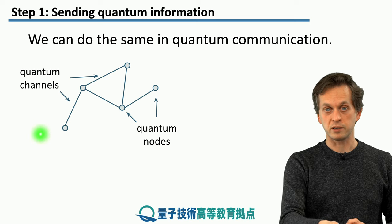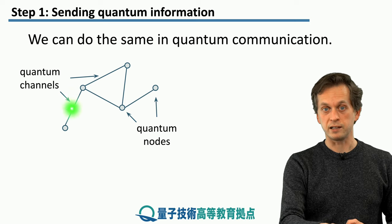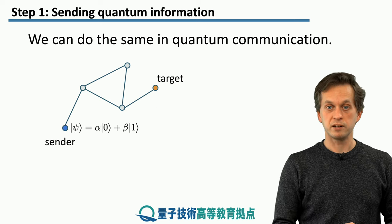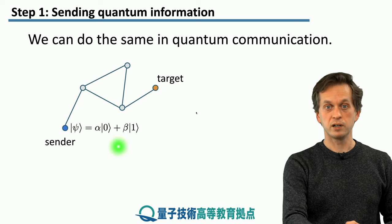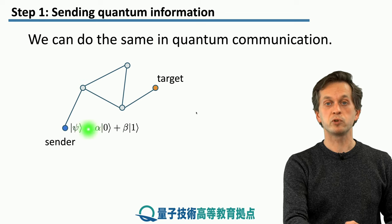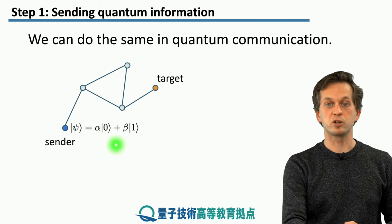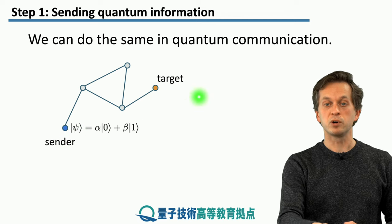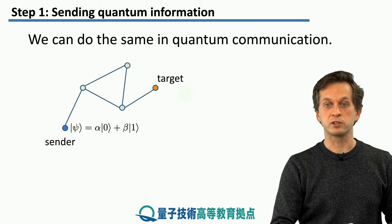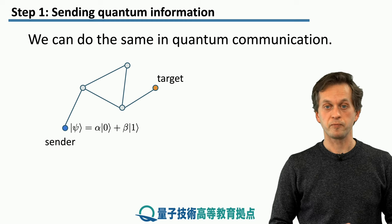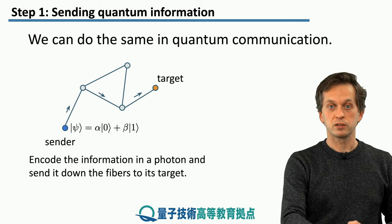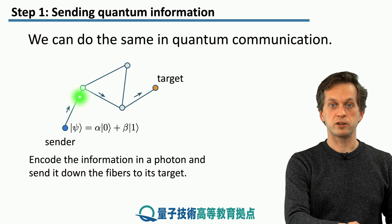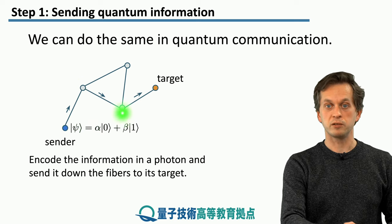In this network, the circles represent our nodes and these lines represent the links between the nodes. If we have a sender, for example, this blue node here, that is in possession of some pure state psi given by alpha zero plus beta one, and the sender wants to send this state to its target given by this orange network node. The sender can decide, or the network can decide, to send it first to this network node, then to this network node, and then finally to reach the target.